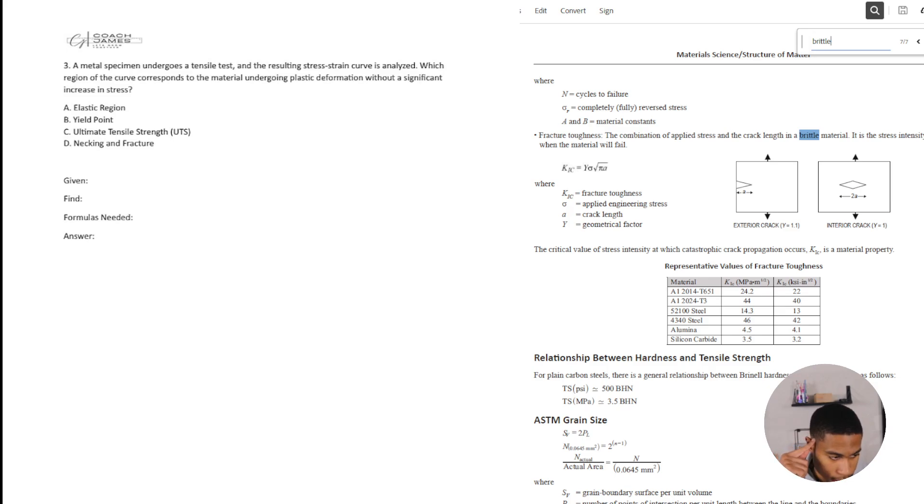All right, number three says a metal specimen undergoes a tensile test and the resulting stress strain curve is analyzed. Which region of the curve corresponds to the material undergoing plastic deformation without a significant increase in stress? So again, this is like prior knowledge, or you need to have a little bit more knowledge on this. So, okay, so it's undergoing the tensile test. All right. And the resulting stress strain curve is analyzed.